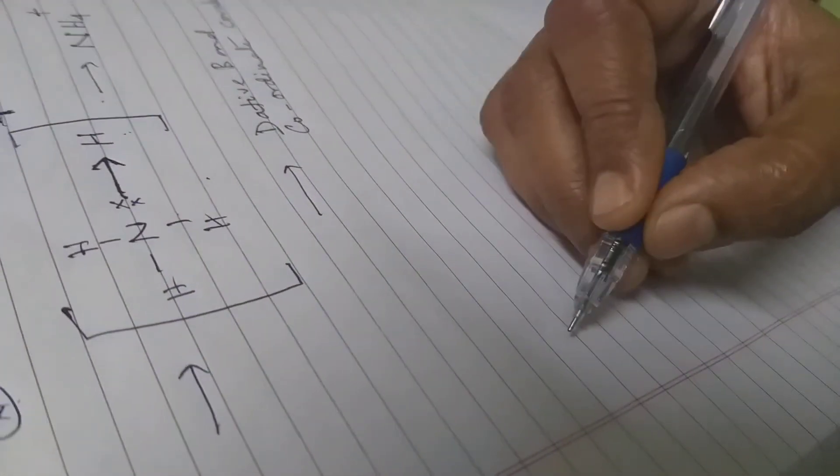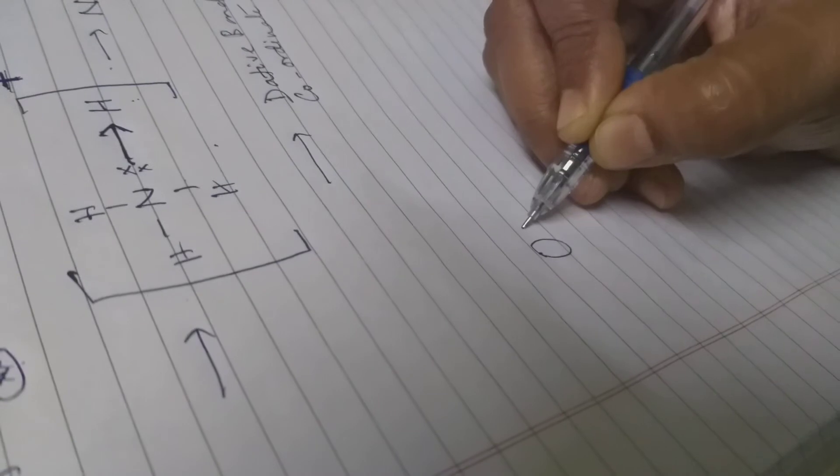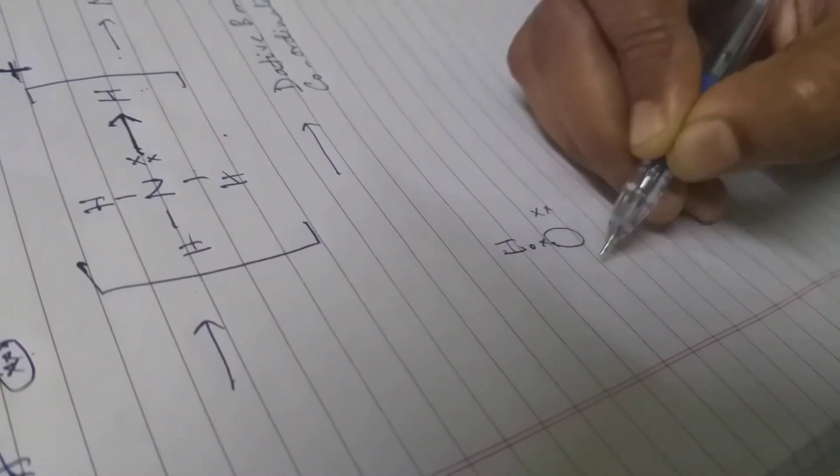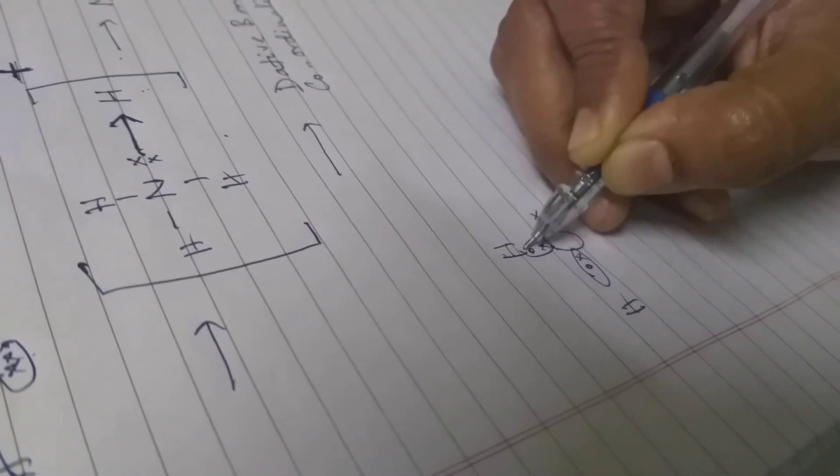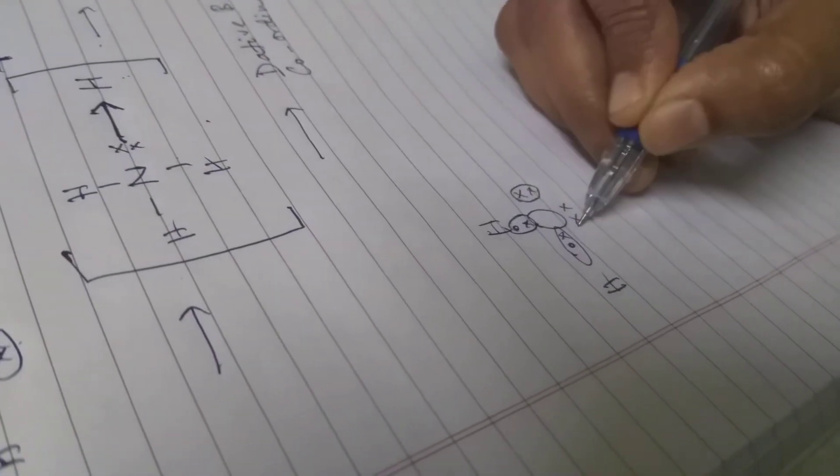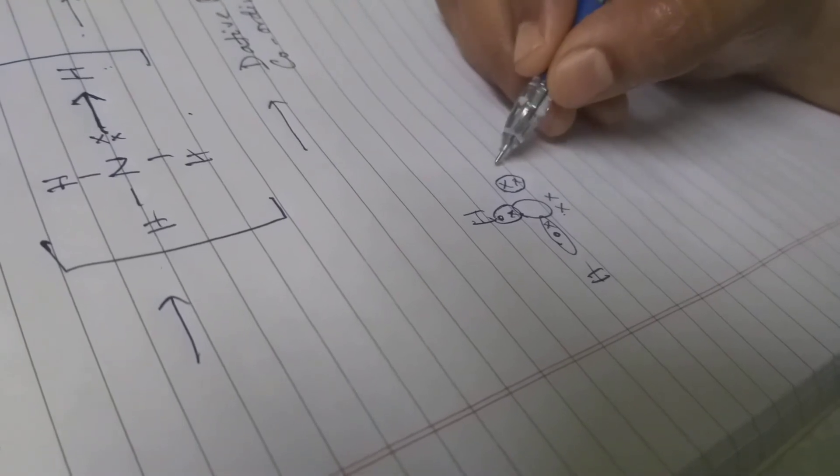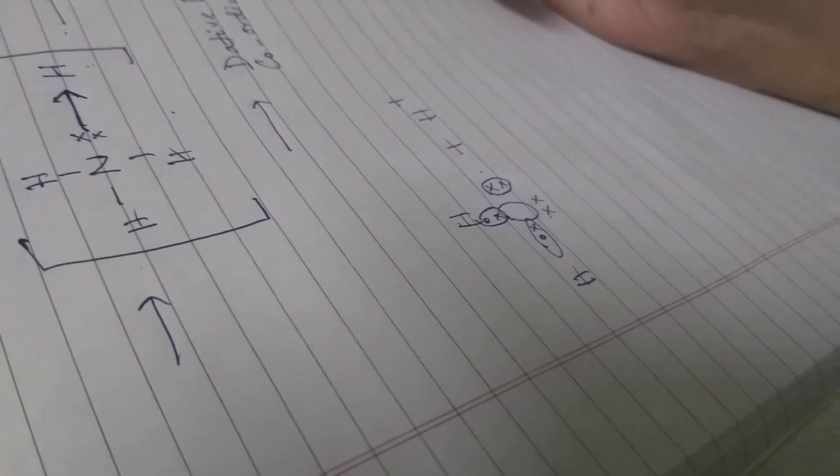I'll again take up water molecule. This is my water molecule H2O and here oxygen is having two lone pairs, but both the lone pairs are not used here. Only one is used and again I'm giving an electron deficient species, there is a proton.